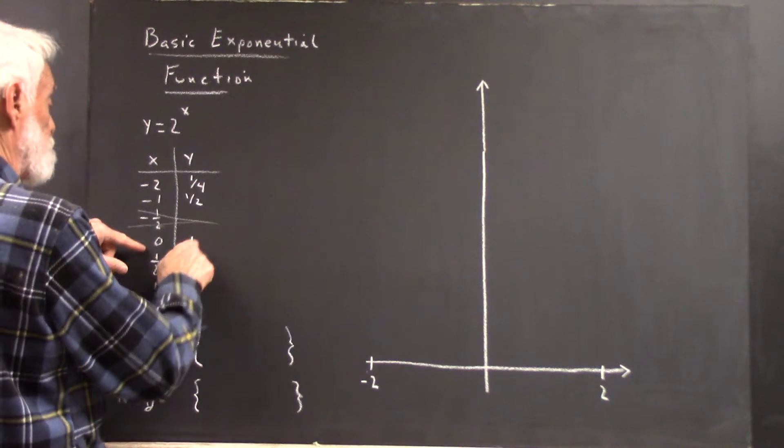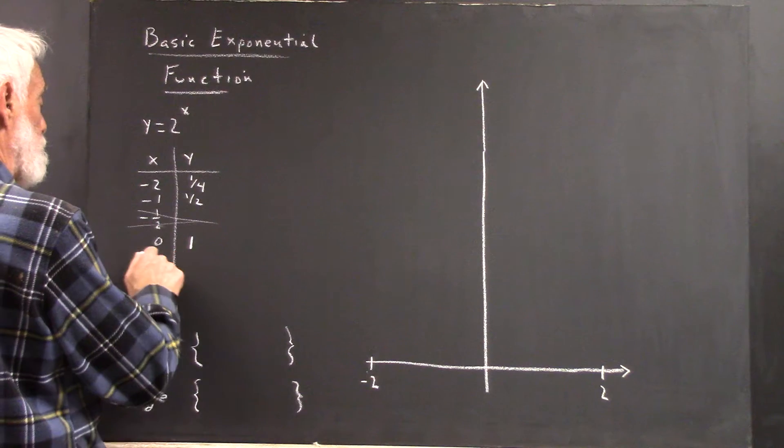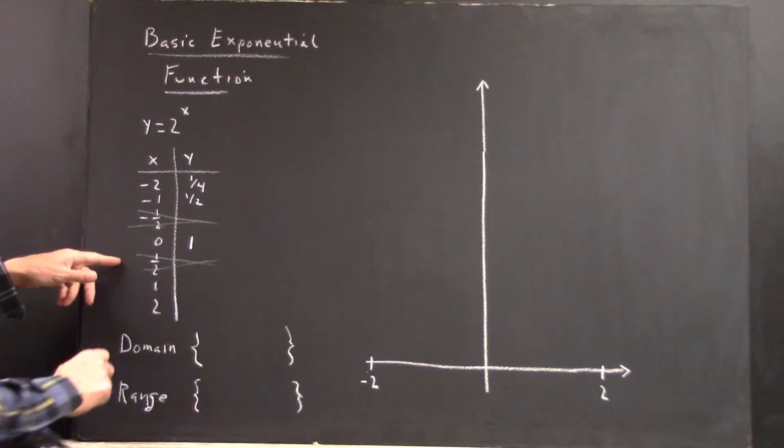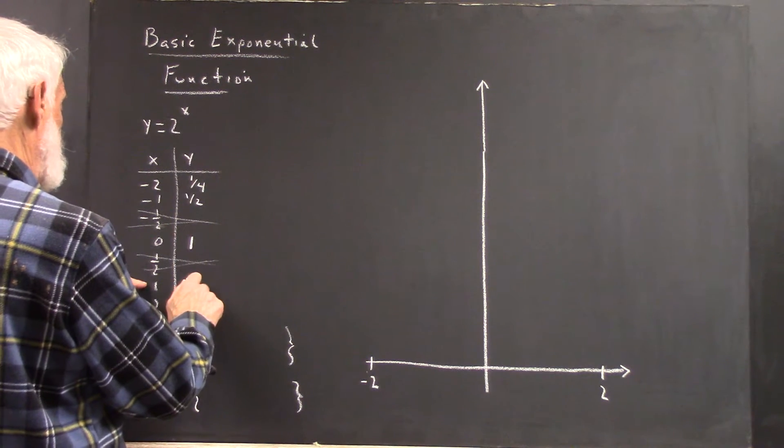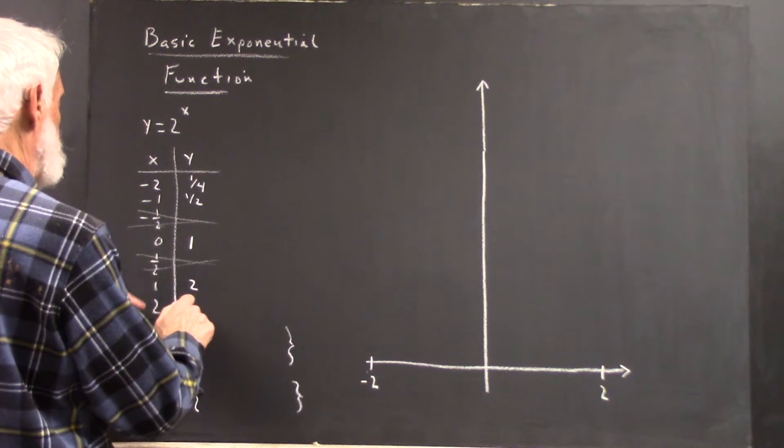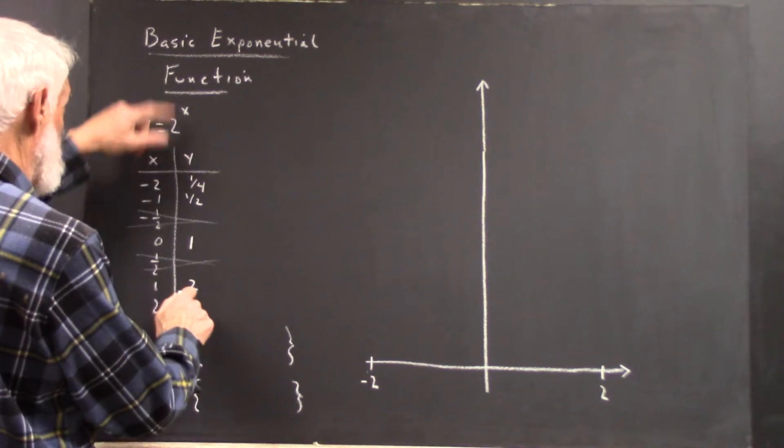When x is 0, 2 to the 0 is 1. 2 to the 1 half, not in our domain because we can't calculate it exactly. When x is 1, we get 2 because 2 to the 1 is 2, and 2 to the second is 4.